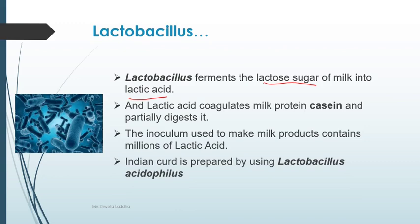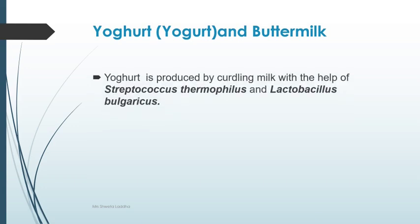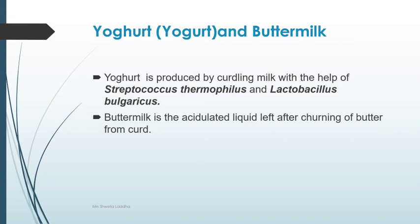Indian curd is prepared using Lactobacillus acidophilus. Yogurt is different from curd — it is produced by curdling milk with other species of bacteria like Streptococcus thermophilus and Lactobacillus bulgaricus. Buttermilk is the acidulated liquid left after churning butter from curd; in common terms we call it chas or tak.